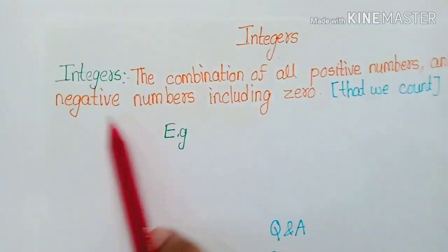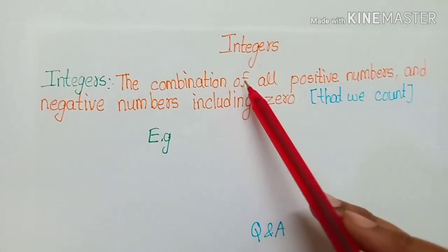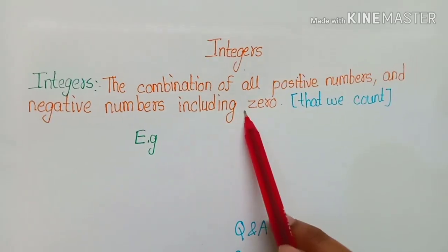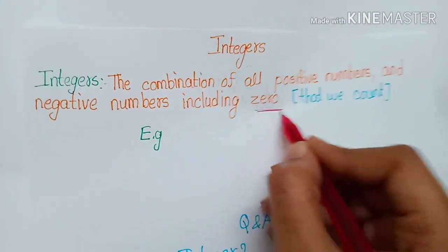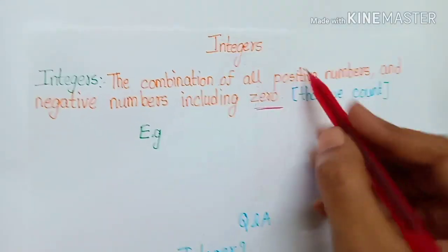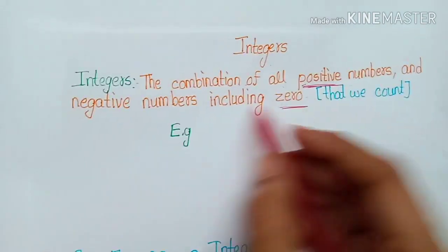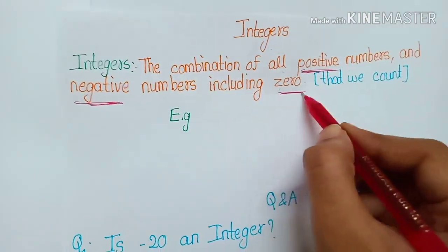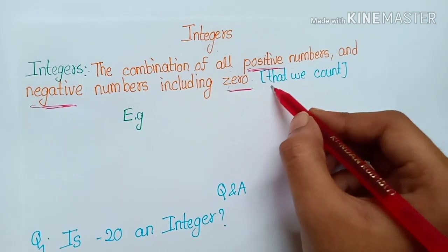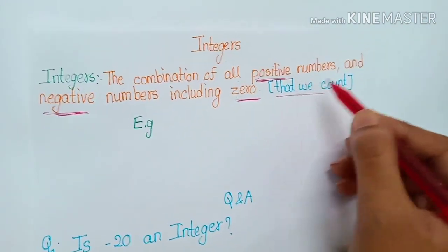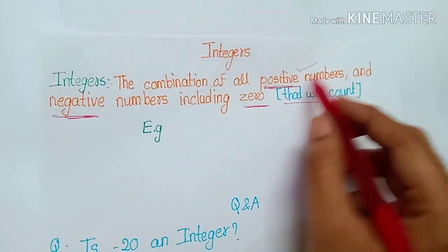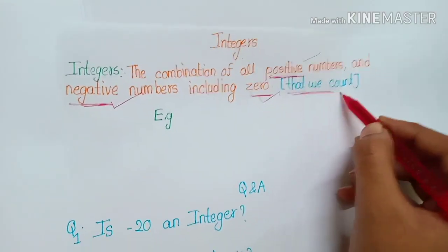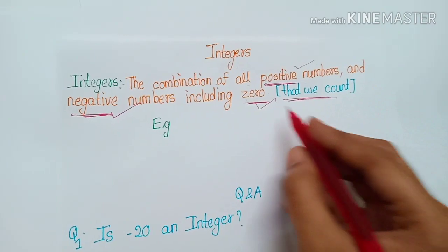What is the definition of integers? The combination of all positive numbers and negative numbers including zero. The rule is that the numbers should be ones that we count — the positive numbers, the negative numbers, and zero.